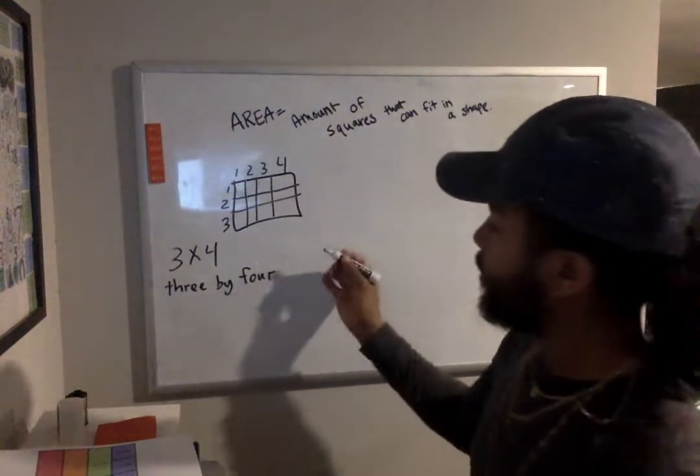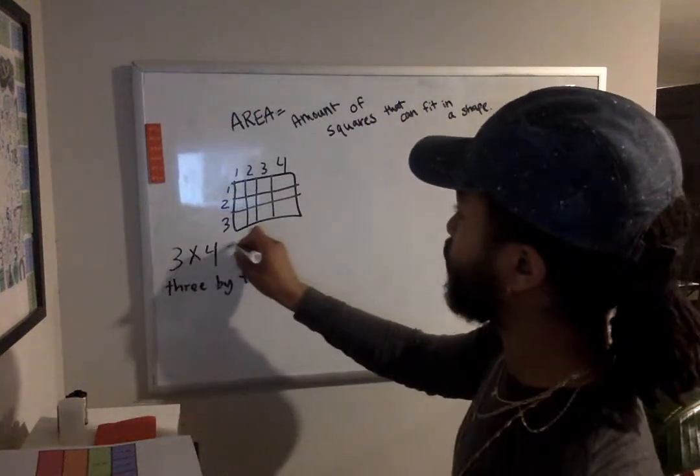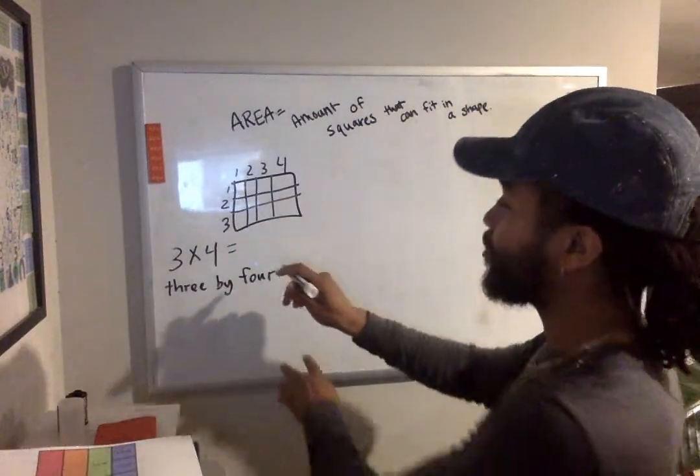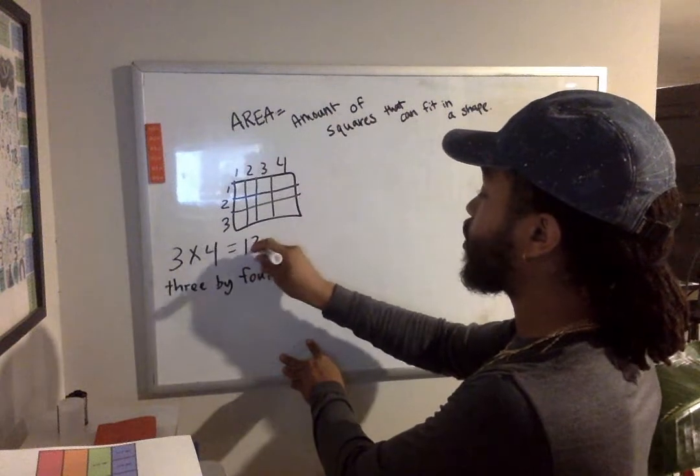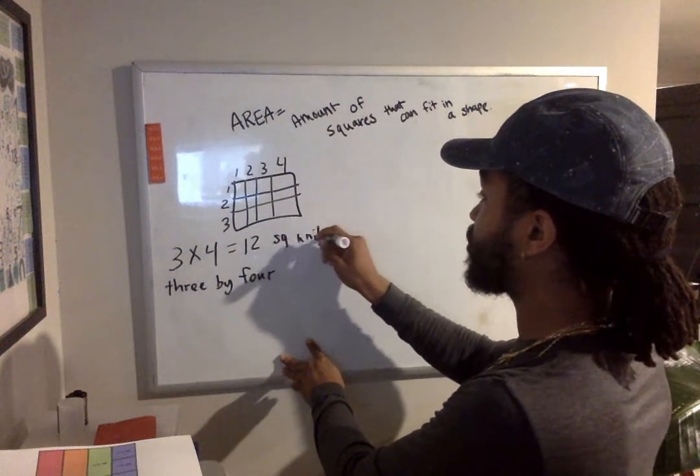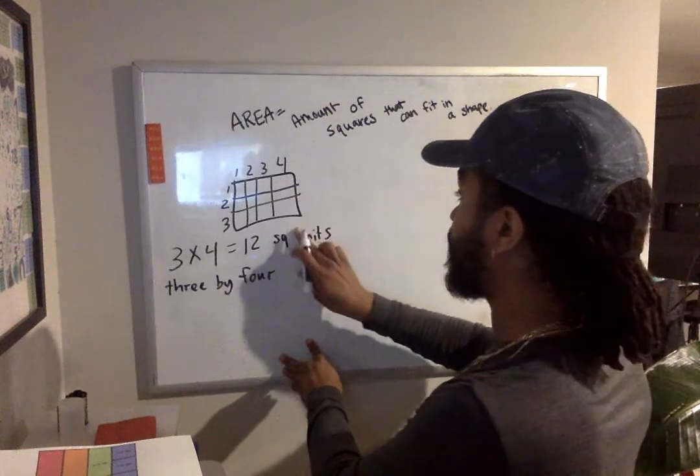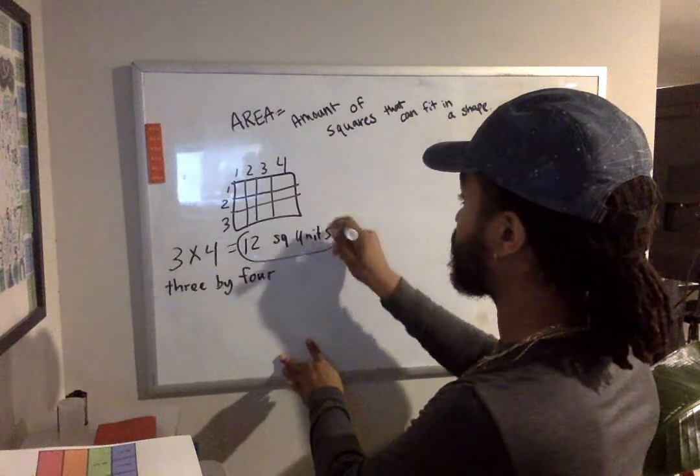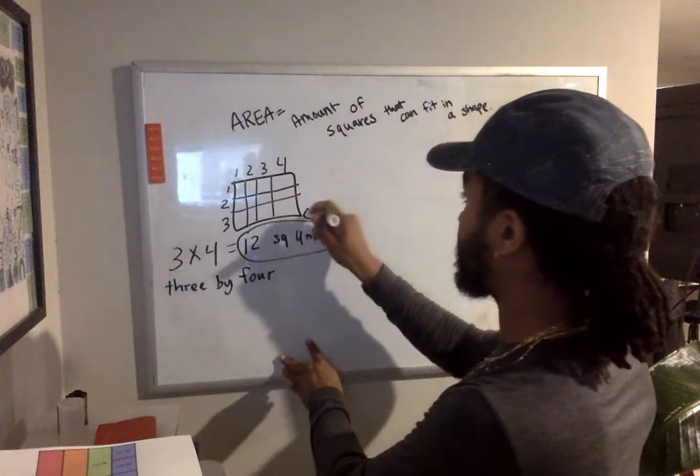And we know that the total amount of squares, I know they're not squares, but take it easy on me. It would be 12 square units. Because we don't know what the units are. I didn't measure them. They're not all perfect. It's not centimeters, yards, or anything. So 12 square units.